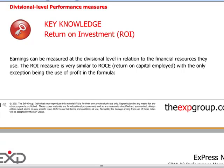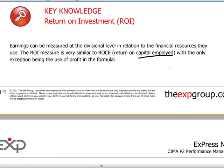The return on investment notion is an attempt to look at not simply the profitability of a division, but to understand whether they are generating sufficient profitability given the amount of capital that they have invested in the division. This is referred to as the capital employed — the capital resources that are tied up in and allocated to the division, which they need to generate a return on.